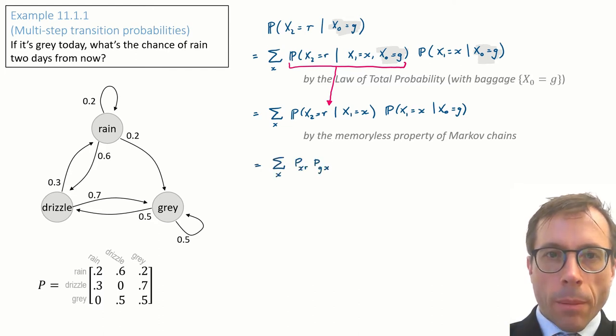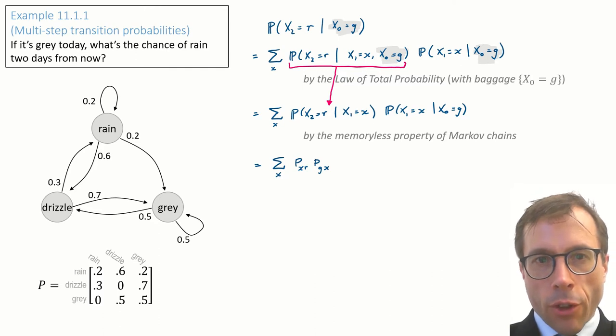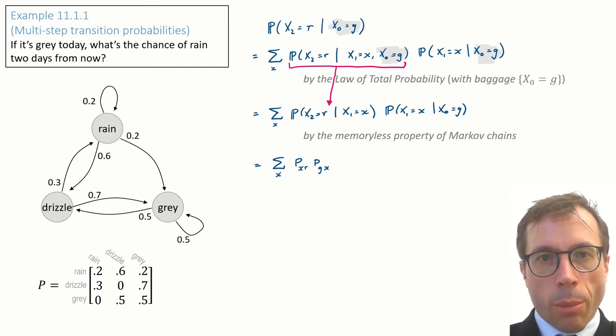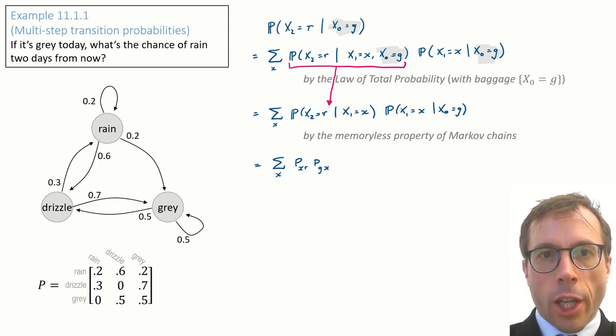The next step is simply rewriting the two probabilities in terms of the transition matrix P. The first term is the probability of going from x to r, Pxr, and the second term is the probability of going from g to x, Pgx.